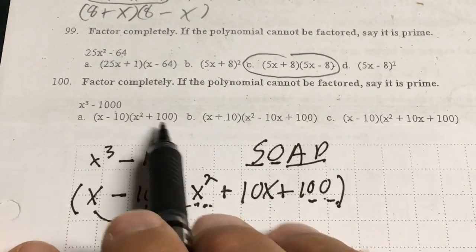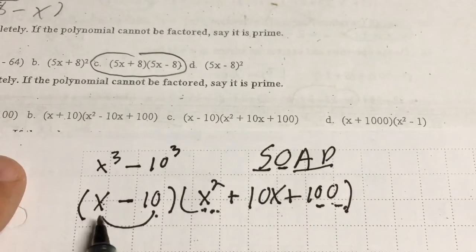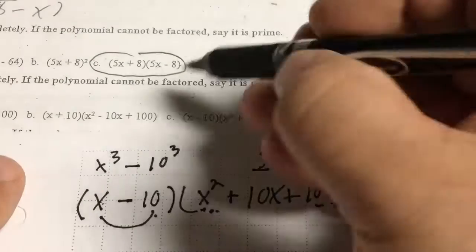Let's see. Can't be choice A. Can't be choice B. It has a positive there. Choice C. Negative, positive, positive. Negative, positive. Positive. x, 10, x squared, 10x, 100. Choice C.